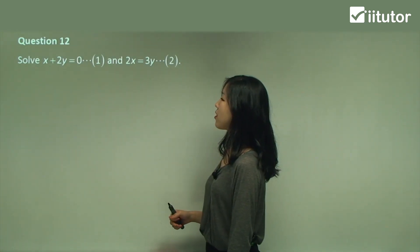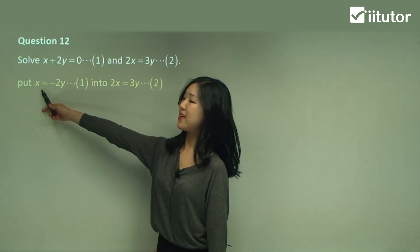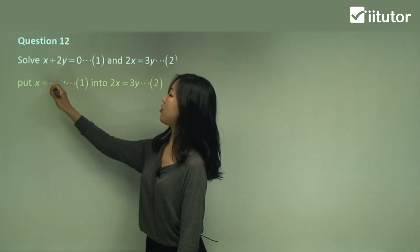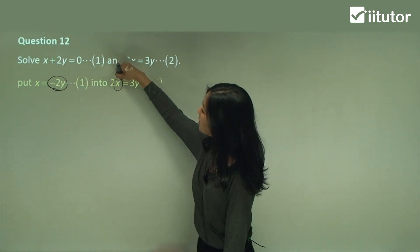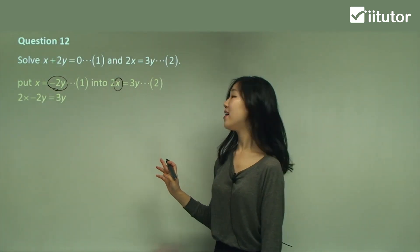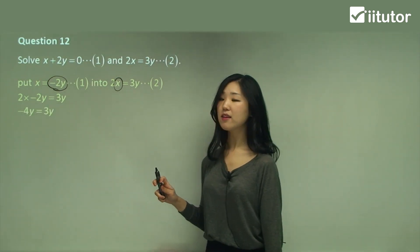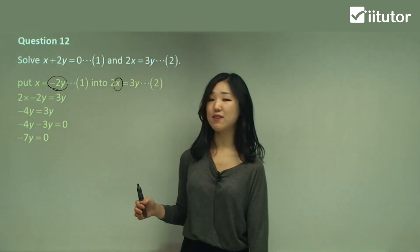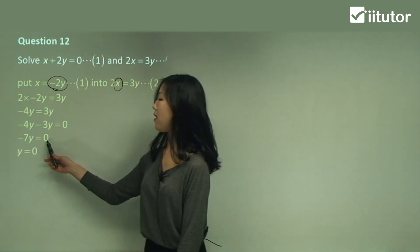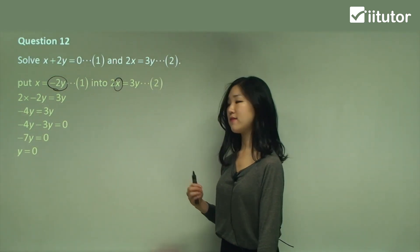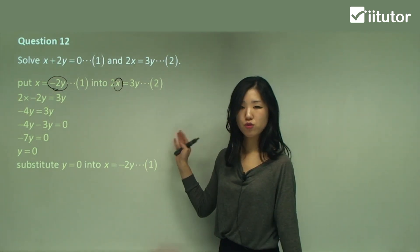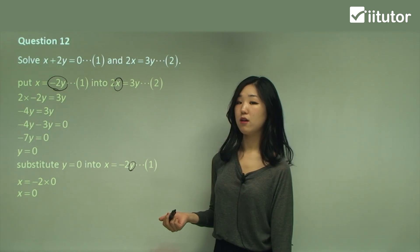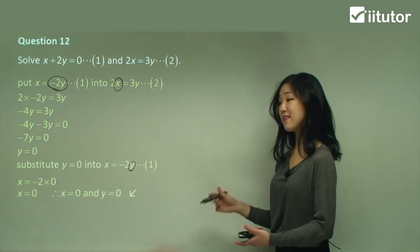Let's do another one. We have equation 1 and equation 2. I'm going to change equation 1 by making x the subject — I move the 2y over to the right, making it negative 2y, so x equals negative 2y. Substitute that into the second equation in the position of x: 2 times negative 2y equals 3y. 2 times negative 2y is negative 4y. Gather like terms — negative 4y minus 3y is negative 7y equals 0. So y equals 0. Substitute y equals 0 back into equation 1: x equals negative 2 times 0 equals 0. So x and y are both 0.